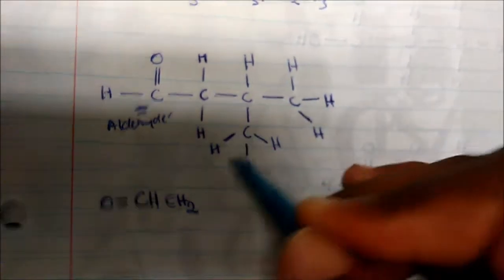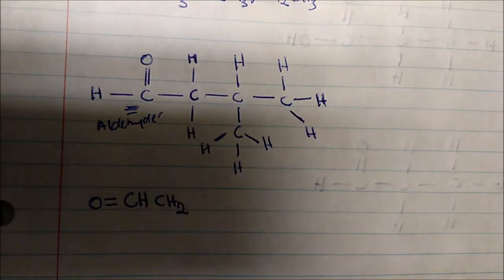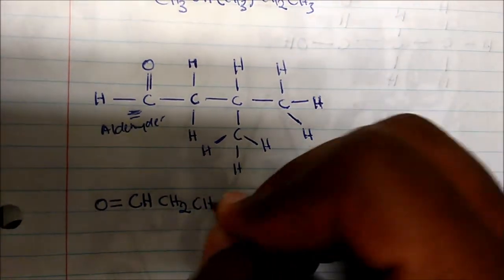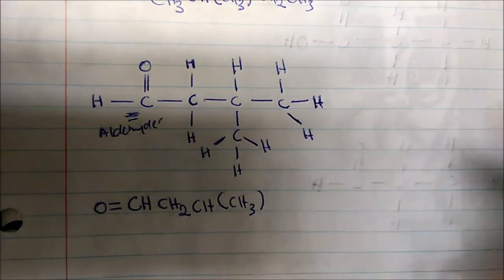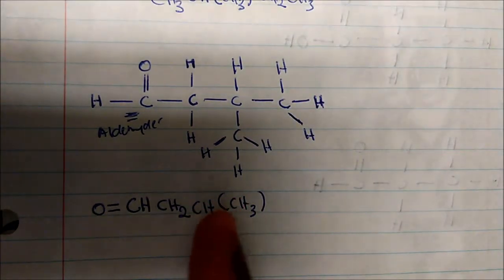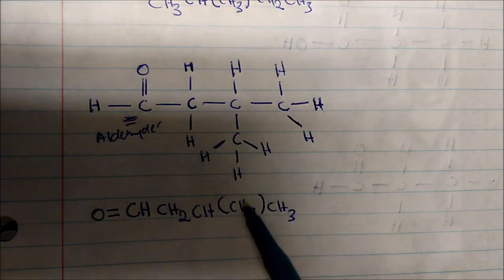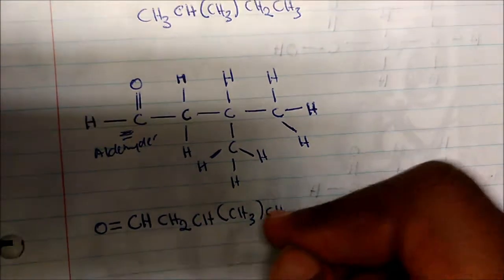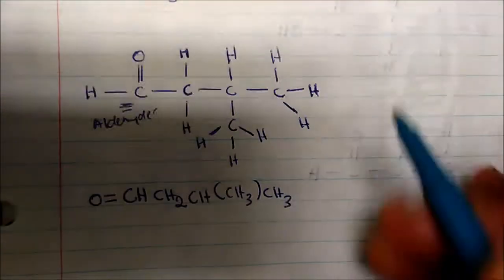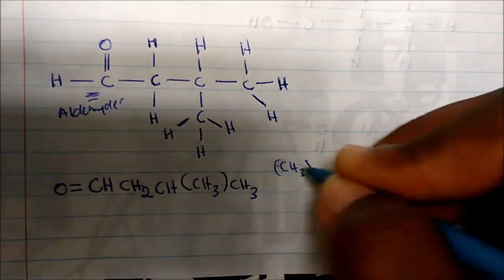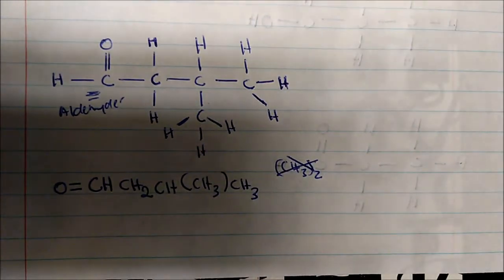Then I have a carbon with a branch — these are methyl groups, also called substituents. Since we have a branch, we put it in parentheses. So I write CH with CH3 in parentheses, then the remaining CH3. Notice I did not write (CH3)2 — that would be wrong because one of these CH3s is branched off, and branches must be shown separately.